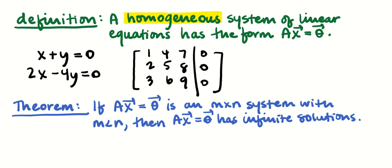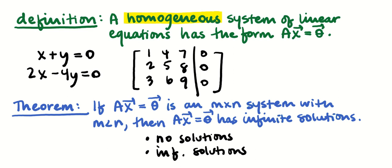The last thing about homogeneous systems: if you have a homogeneous system that's m by n with m less than n, then you are guaranteed infinitely many solutions. Here's why: if it's m by n with m less than n, we said that means either no solution or infinitely many solutions. But we just said every homogeneous system is consistent, so no solution is not an option. That means we're only left with infinitely many solutions.